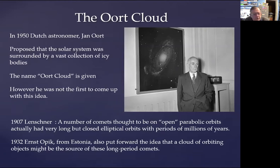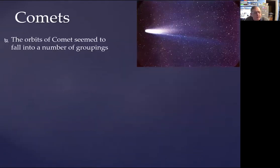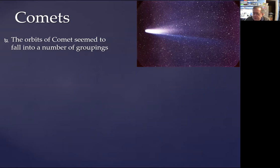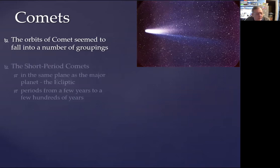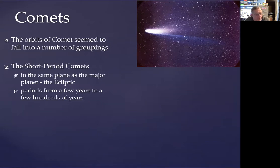That idea was very much taken up 20 years later by Jan, as we've said. So if we think about comets and start to look at the nature of the comets we see coming through the solar system with their amazing tails, they seem to be able to be grouped into a number of different categories — we love categorizing things. So we've got short-period comets, and these tend to be in the plane of the ecliptic.